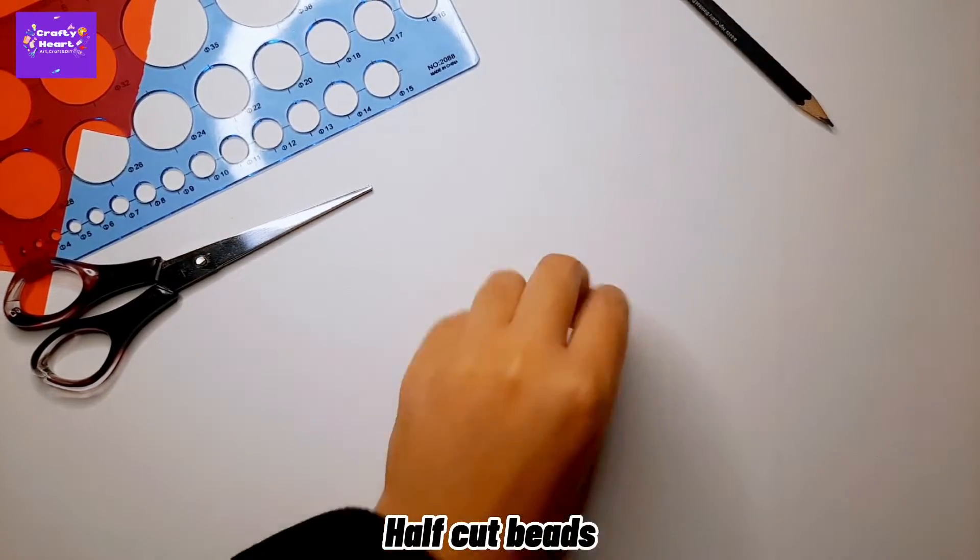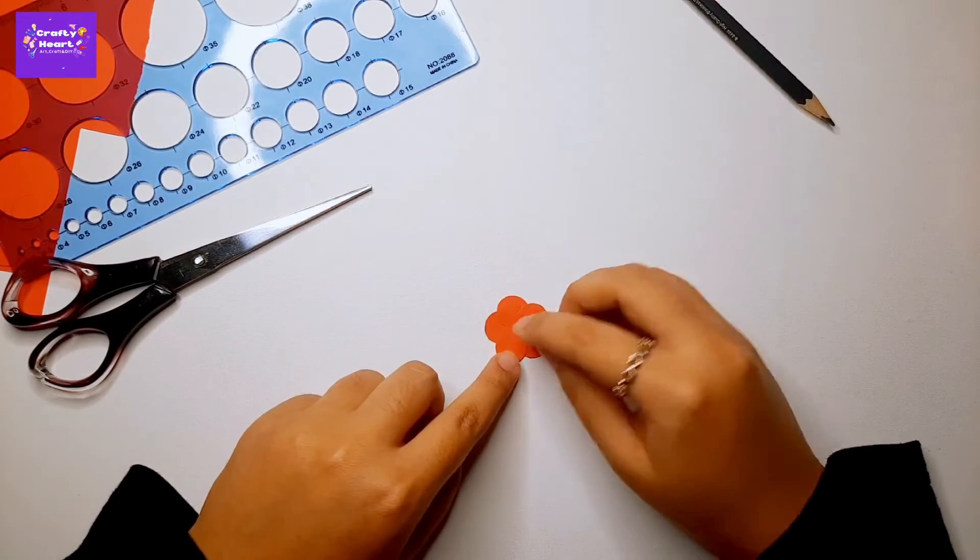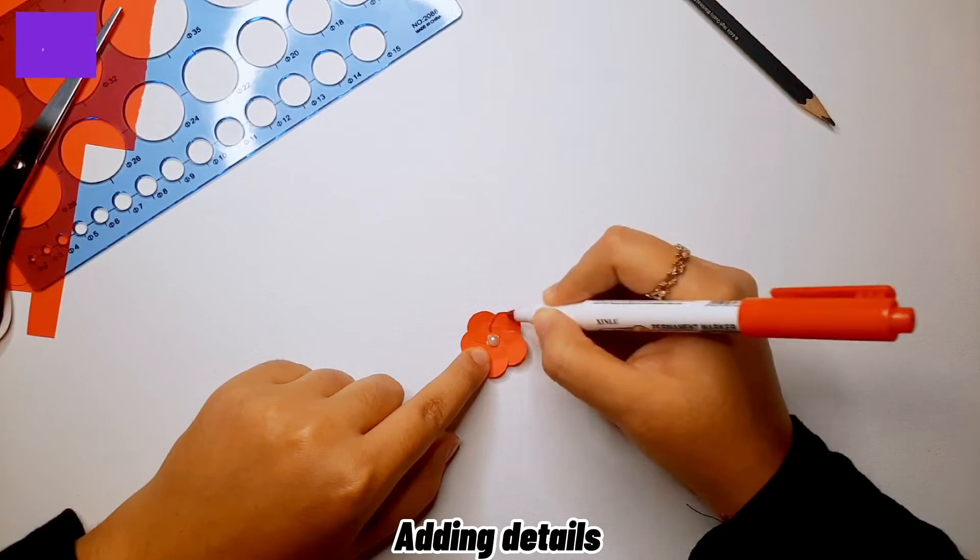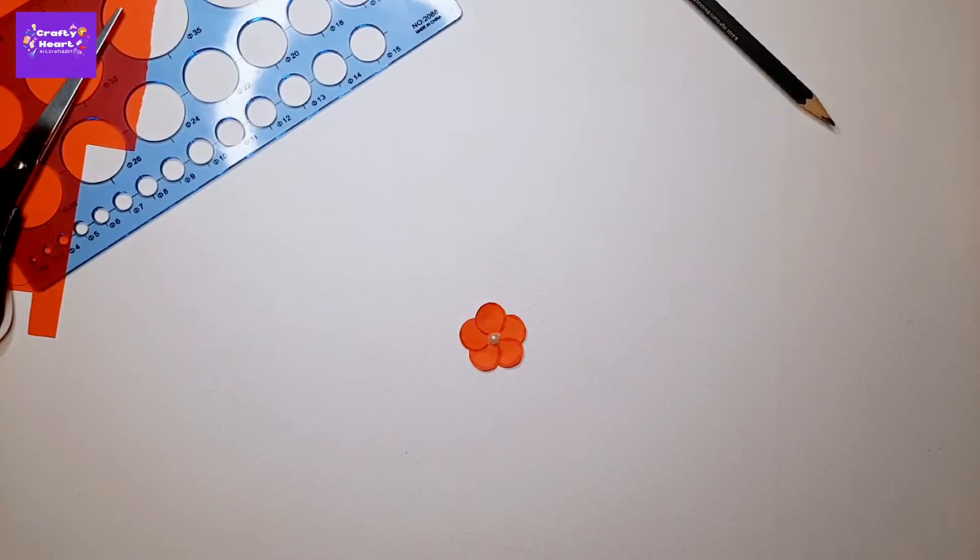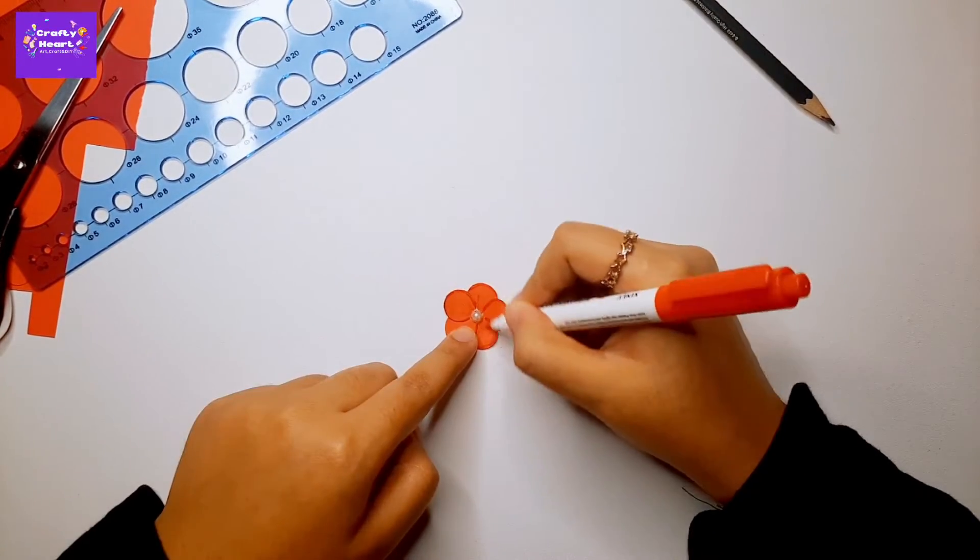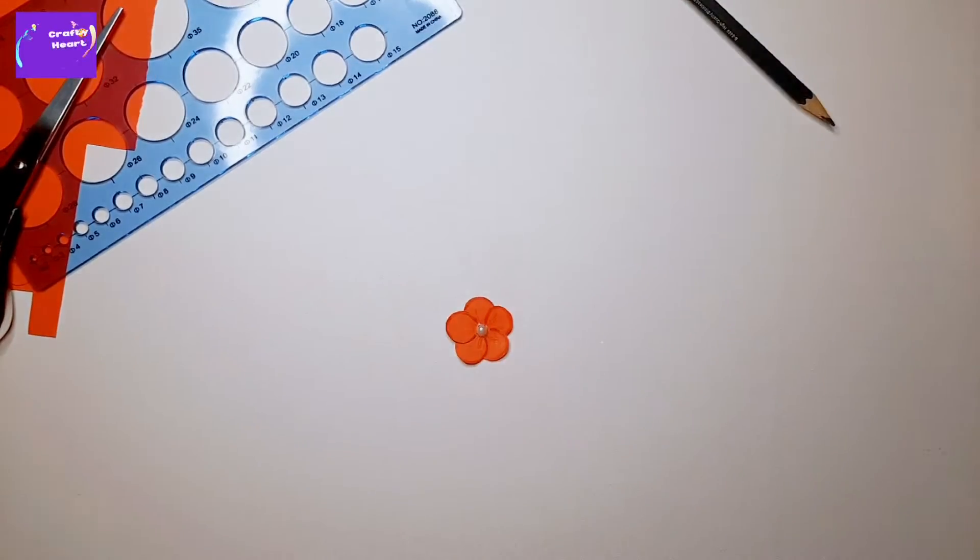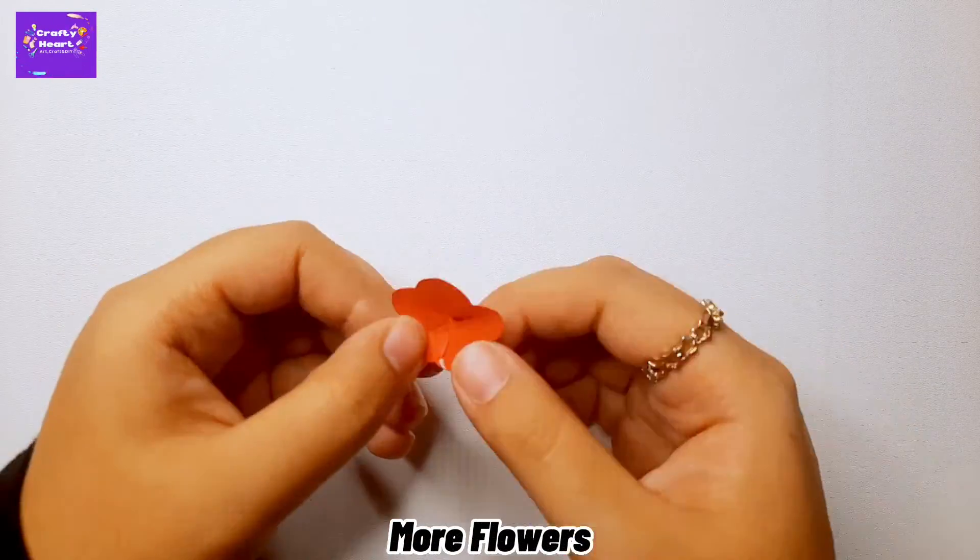And here I am gluing a half cut bead in the center of the flower, adding details. In the same way I am making some more flowers.